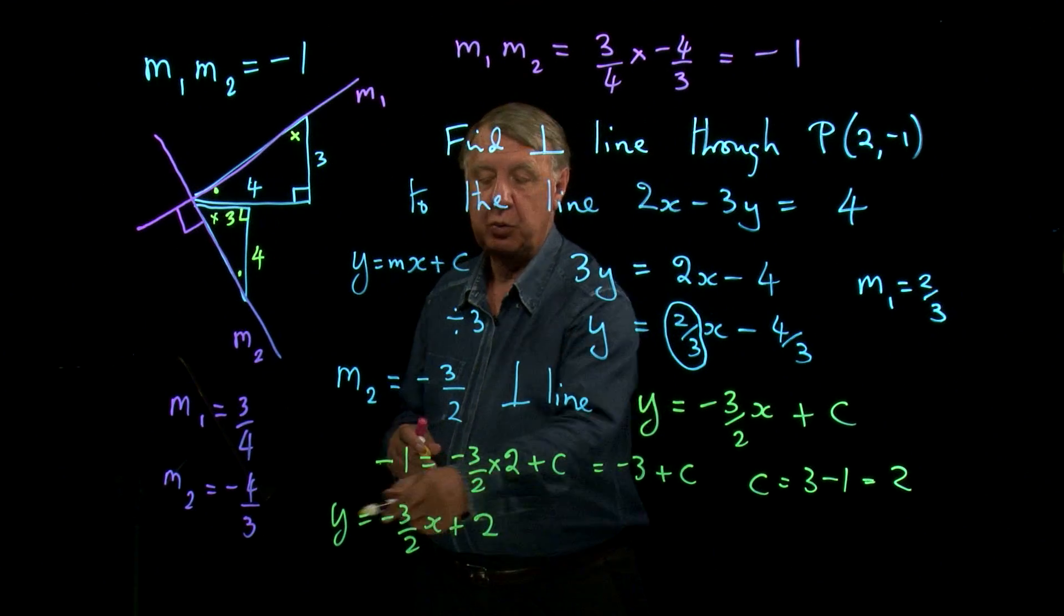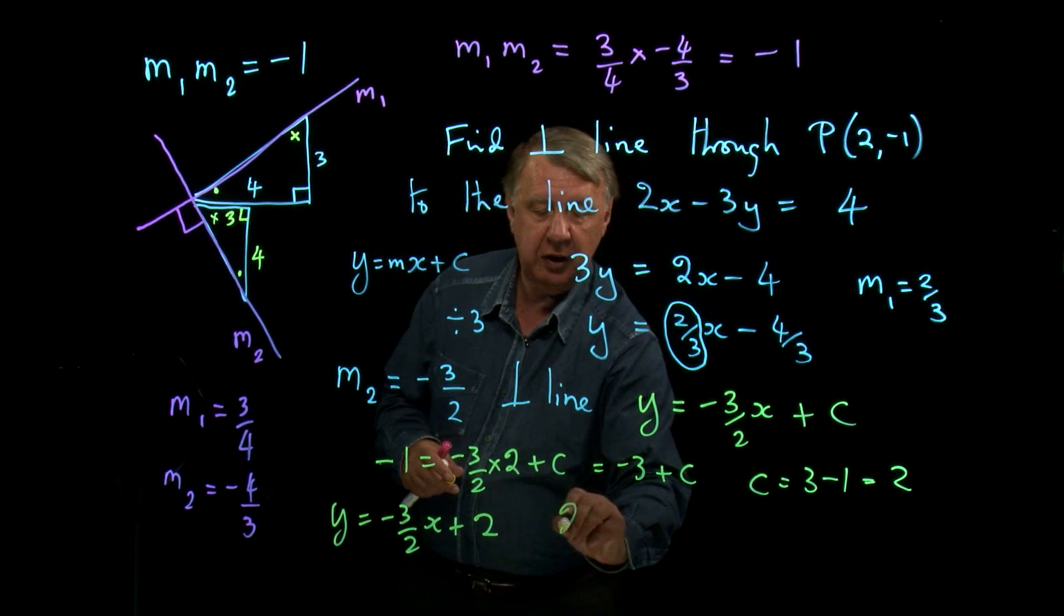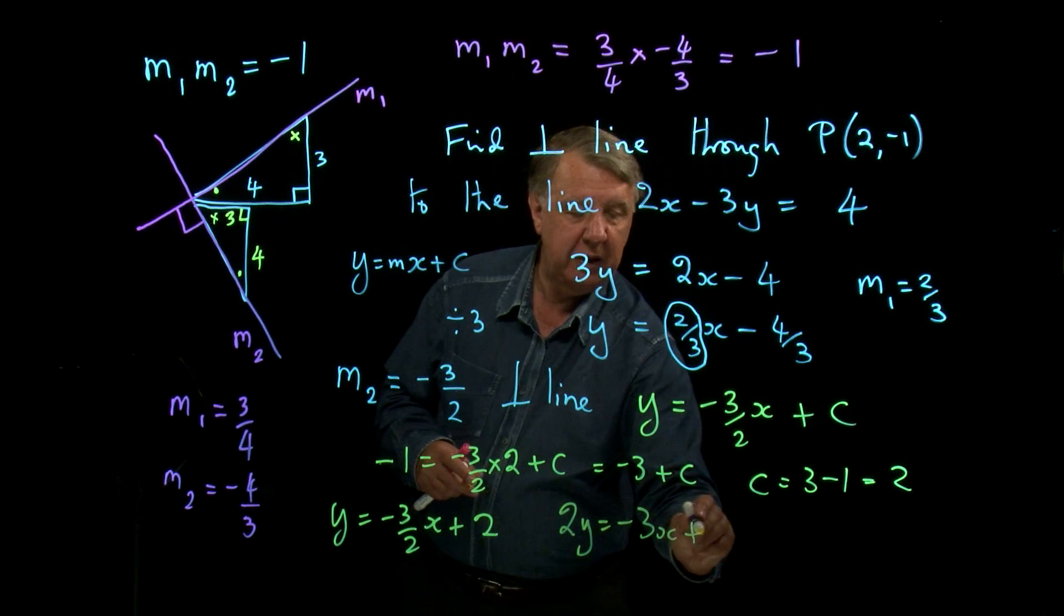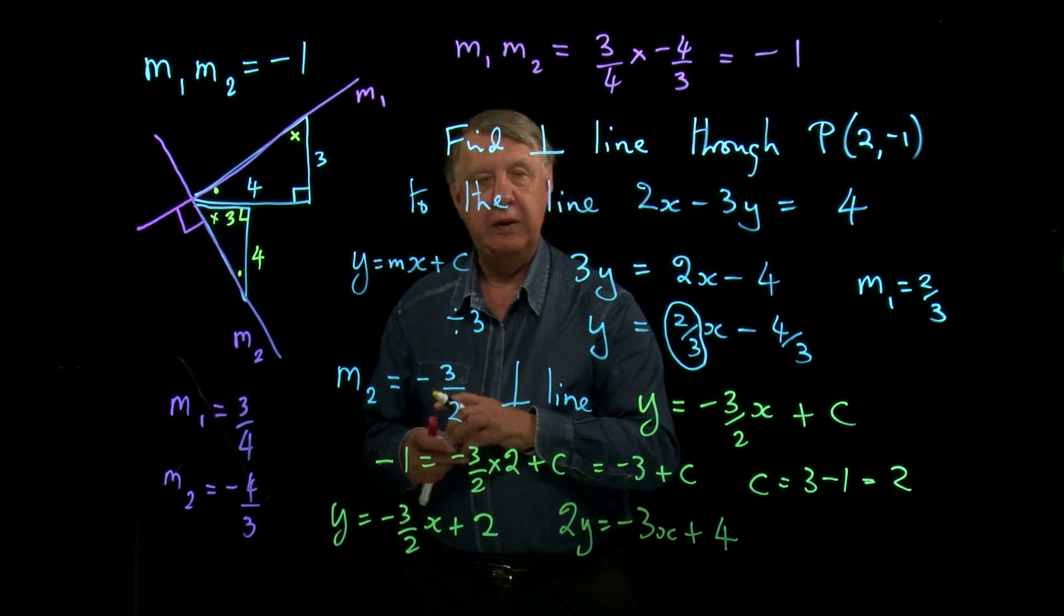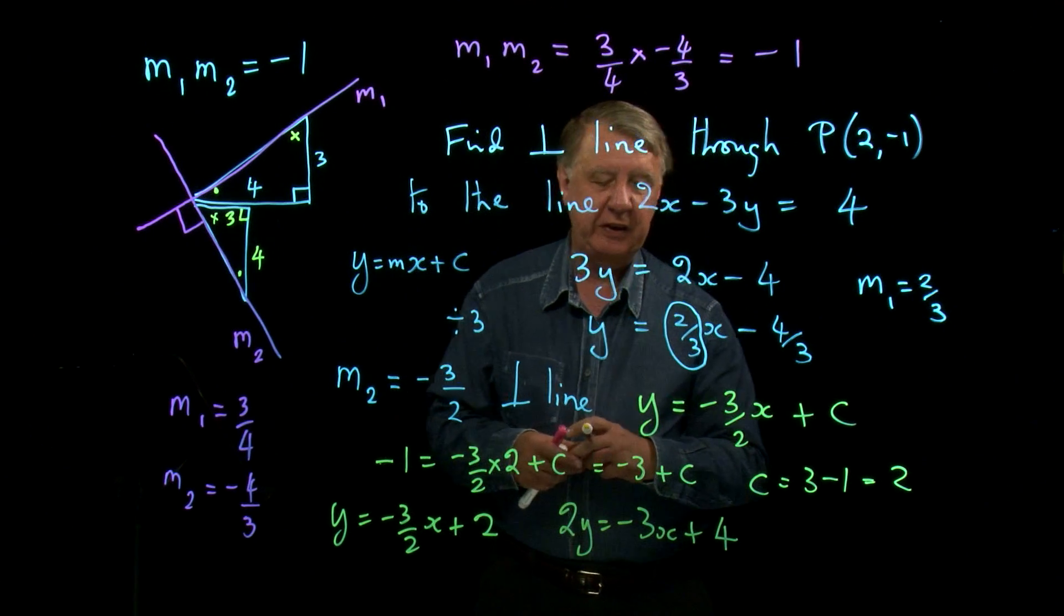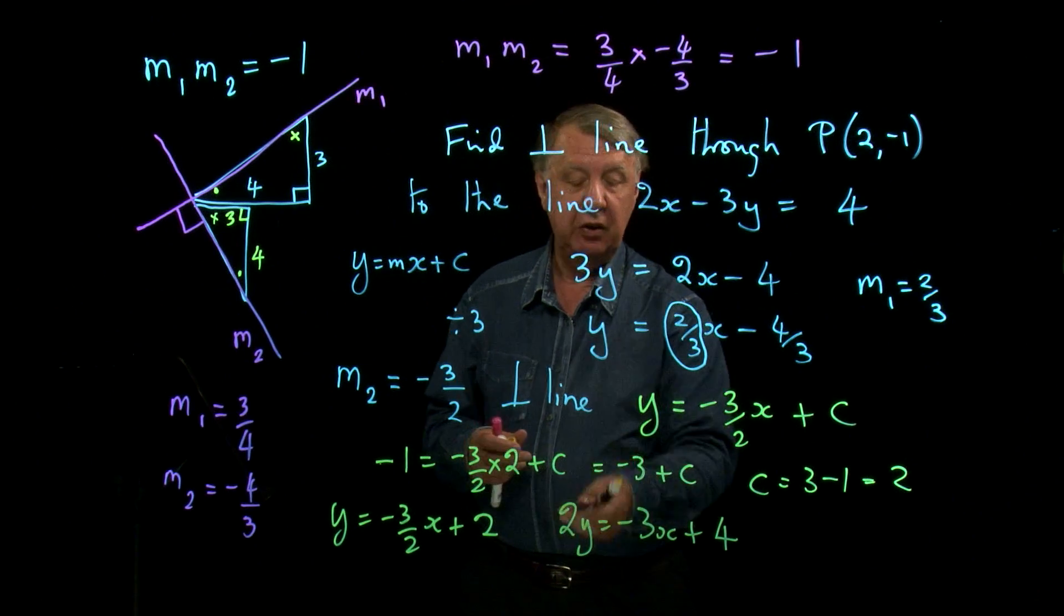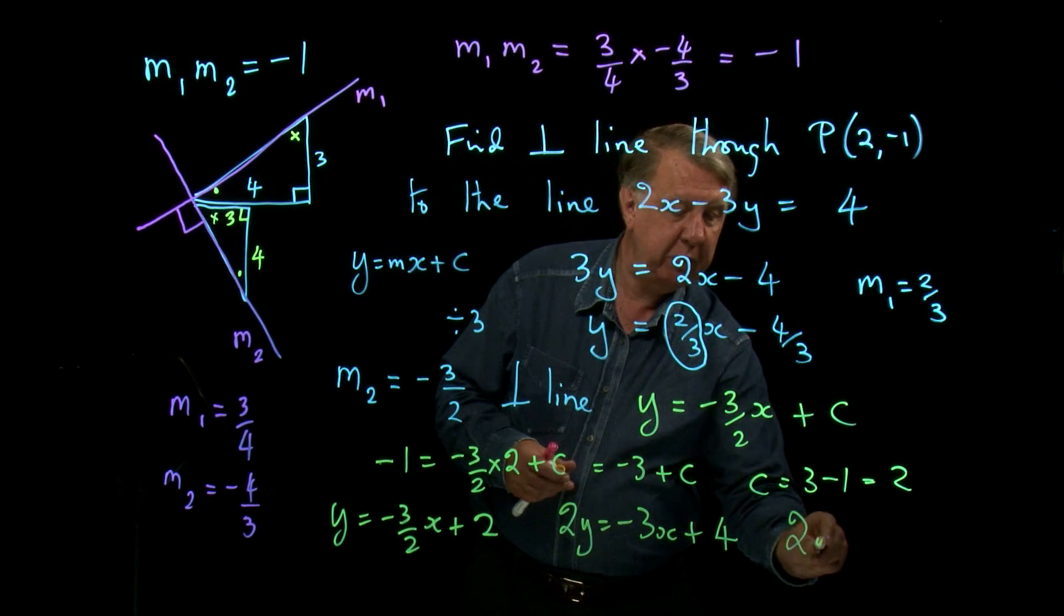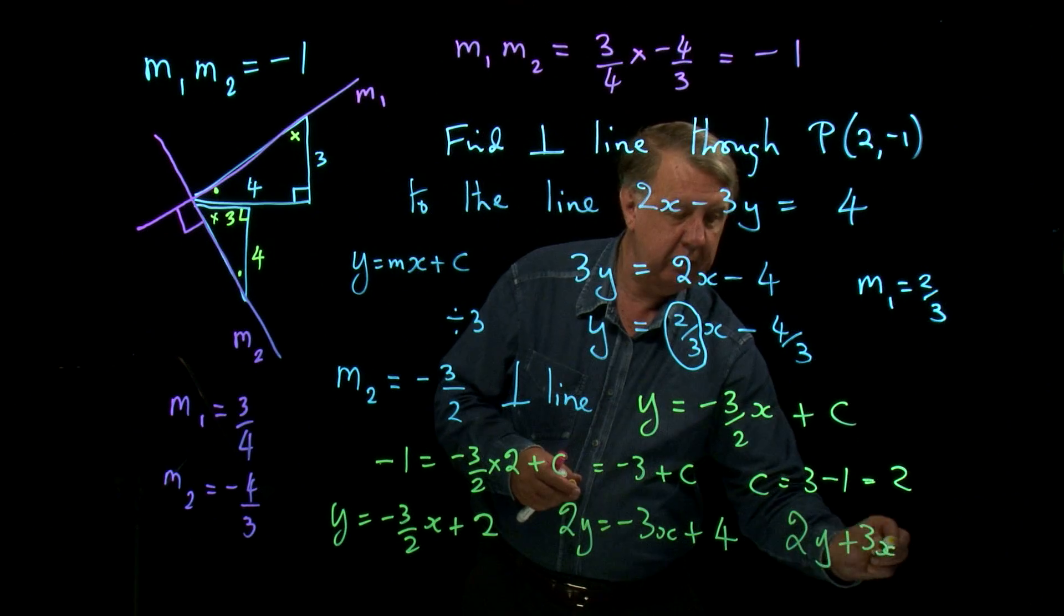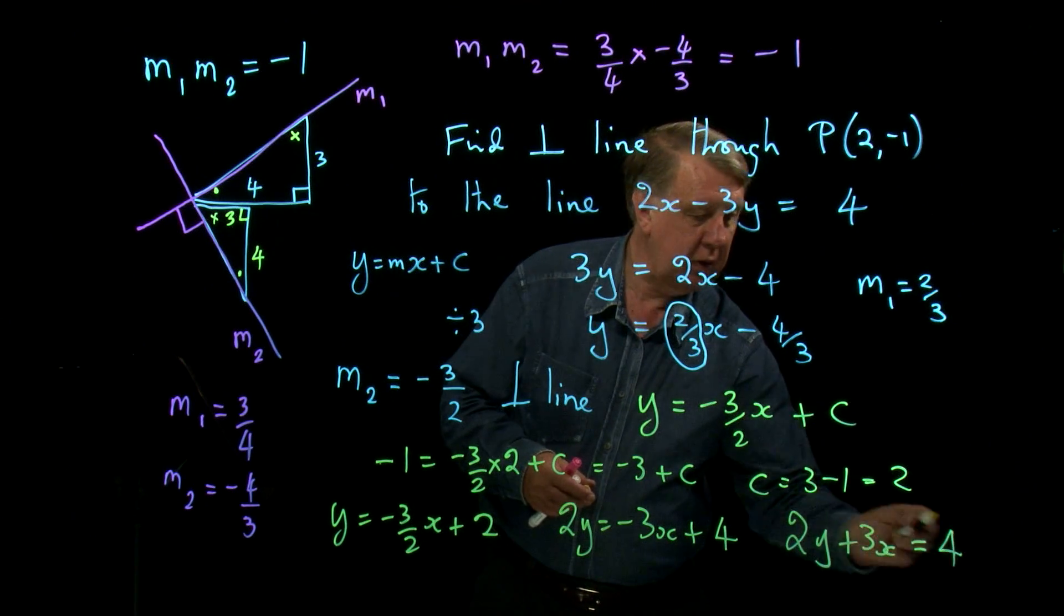So I personally would double that equation, so I would write 2y equals minus 3x plus 4. And I personally don't like to see a negative gradient in a straight line on that side; I prefer it on this side. So I think my version would be 2y plus 3x equals 4.